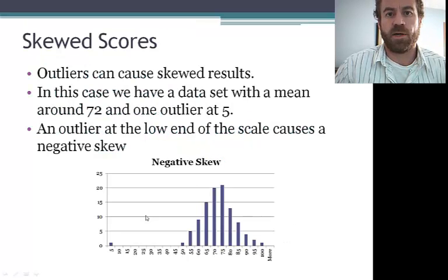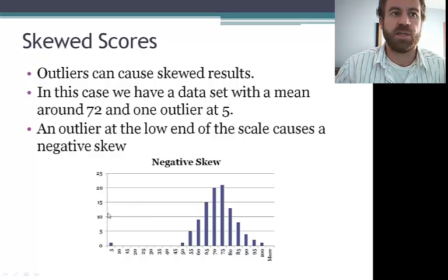Typically, normal bell curves are not the norm. More commonly, you're going to get data that is skewed to one degree or another. And here's a pretty extreme case in which an outlier at the low end of the scale has created a negative skew. So you may read about or you'll see data that asks questions about negative skew or positive skew. The skew is always named for where the outlier occurs. So because our outlier here occurs at the low end, we call this a negative skew.